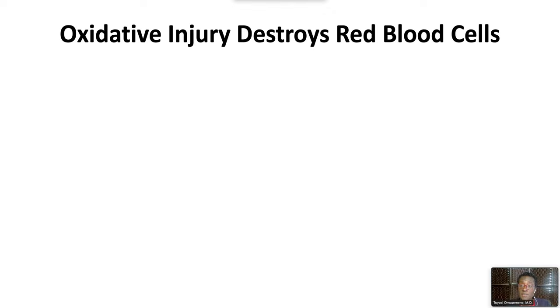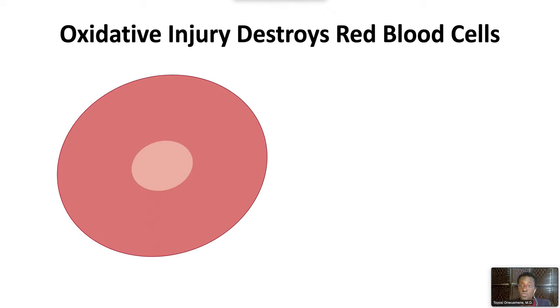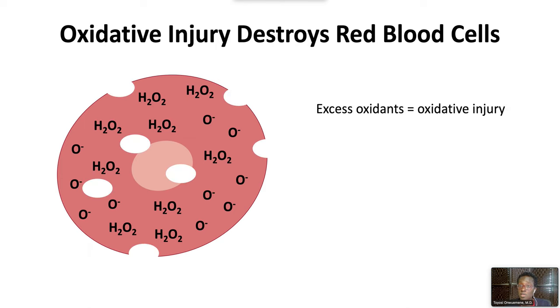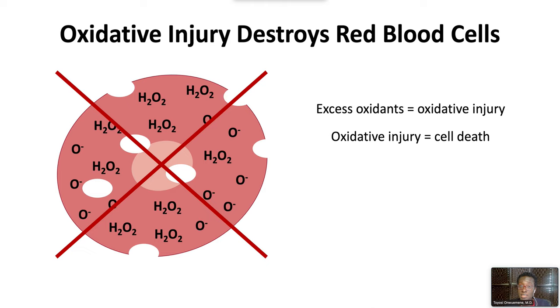The significance of G6PD deficiency is that oxidative injury destroys red blood cells. Oxidative injury comes from oxidants such as superoxide anion and hydrogen peroxide, which can accumulate within red cells and cause hemoglobin and other red cell proteins to become oxidized, leading to loss of function and cell death.